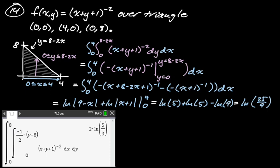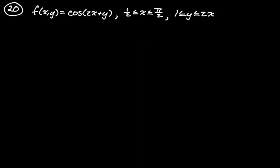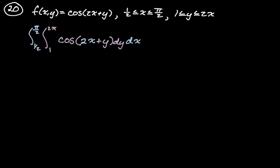One more in this video. Number 20: f(x,y) = cos(2x + y). X is going from ½ to π/2, and y is going from 1 to 2x, which means y has to go first because y depends on x. We're expressly given what we need, so we set up: ∫_{1/2}^{π/2} ∫_1^{2x} cos(2x+y) dy dx. Dy goes first because the y bounds depend on x.